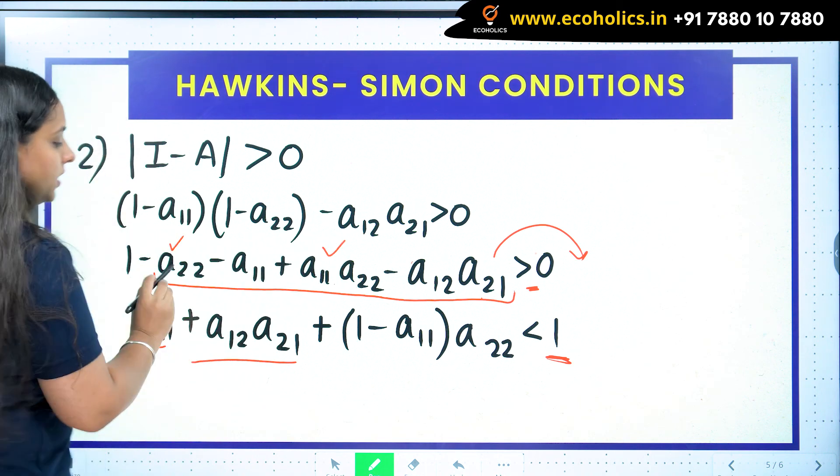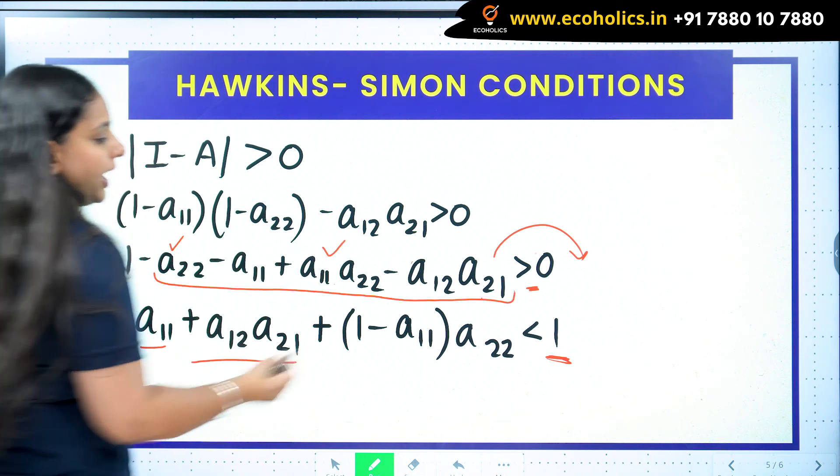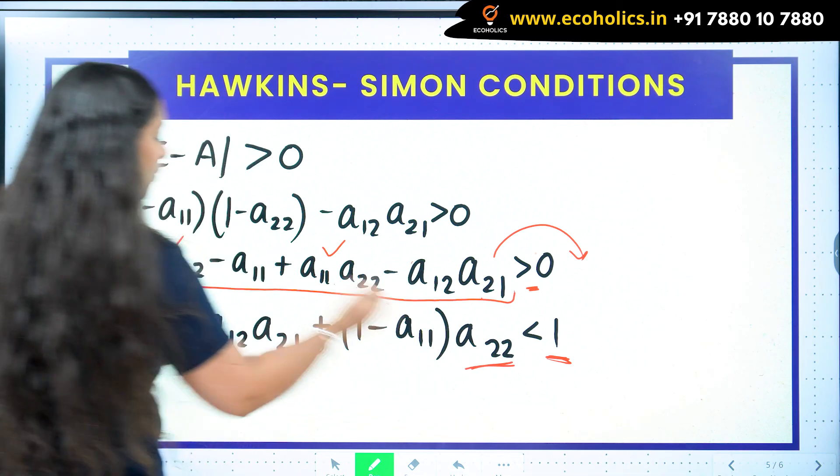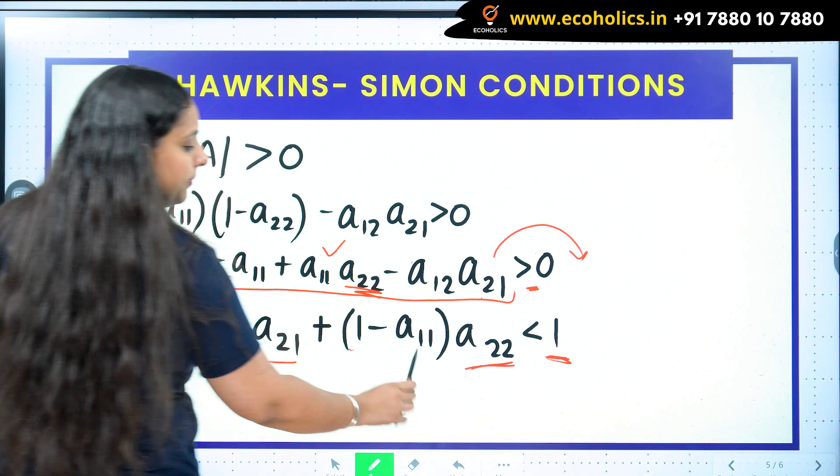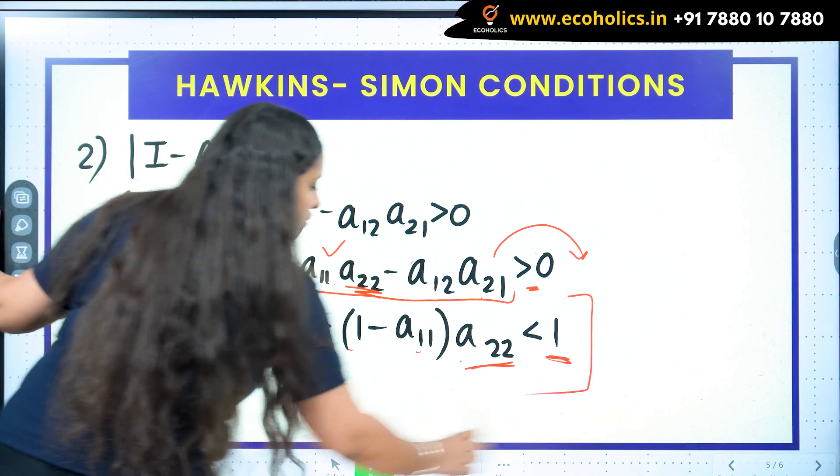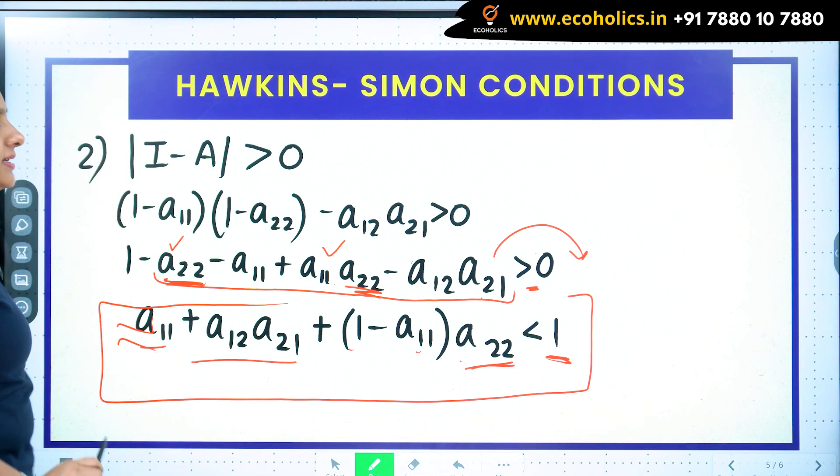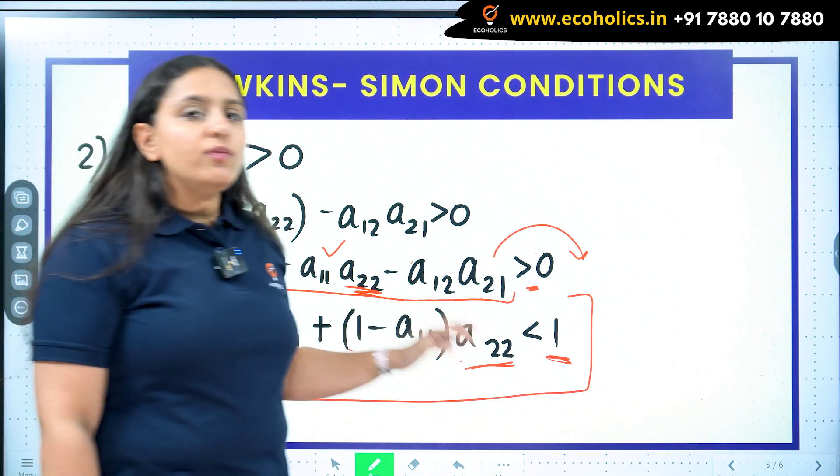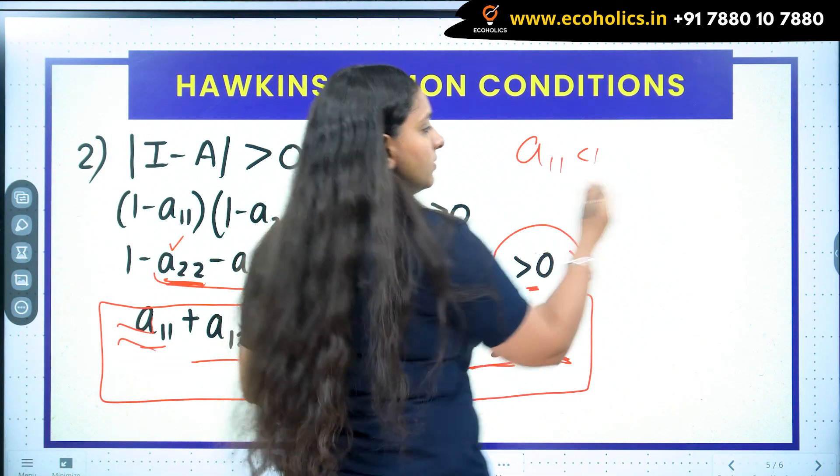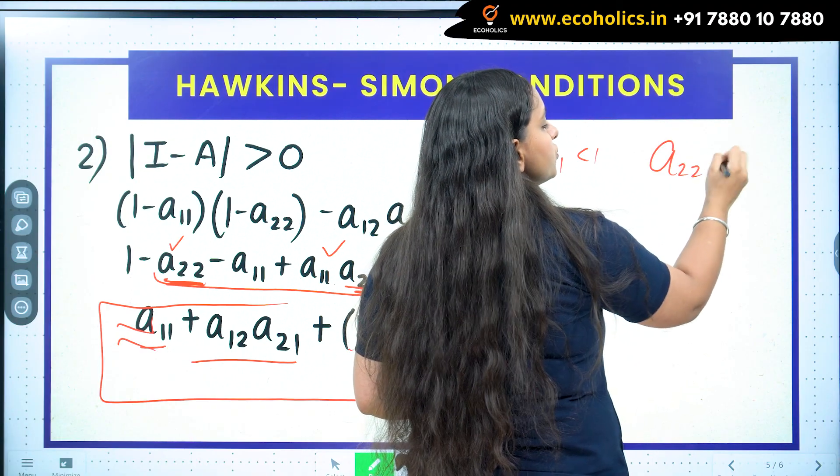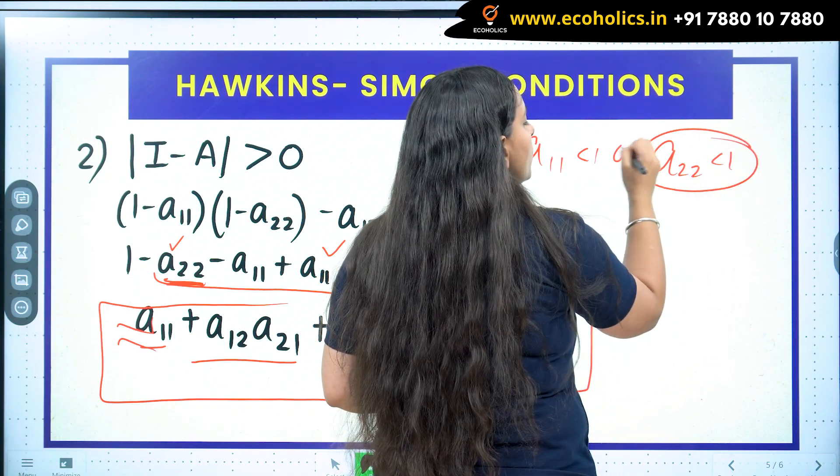If I take a_22 common, what I will be left with is (1-a_11). So this should be less than 1. Now what does it imply? The one thing which you have to observe here is: since a_11 is less than 1, I know a_22 is also strictly less than 1, but they are positive also.